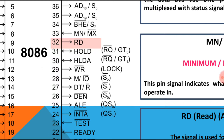S0, S1, and S2 are status lines indicating what type of operation the processor is performing — read, write, halt, or I/O operations. QS0 and QS1 indicate the status of the queue. The 8086 supports a six-byte prefetch queue. The LOCK prefix, when attached to an instruction, prevents the data bus from being allocated to any other device until that instruction completes.